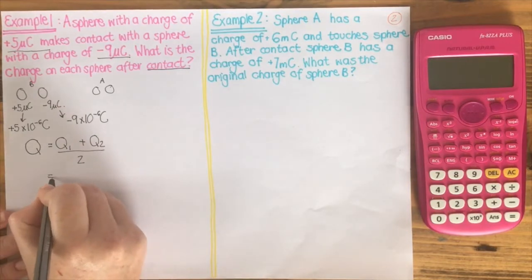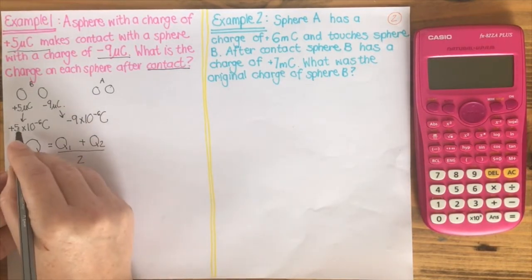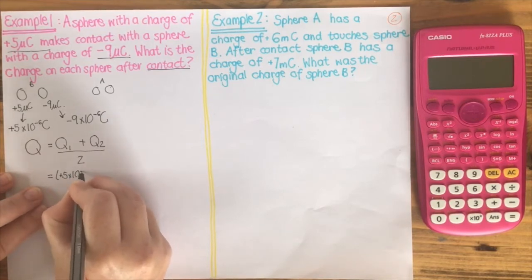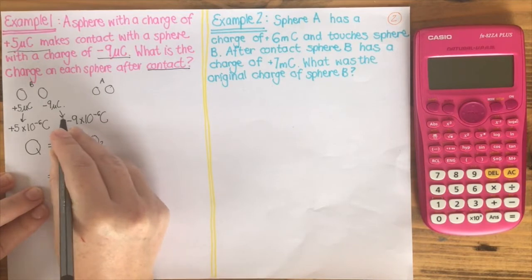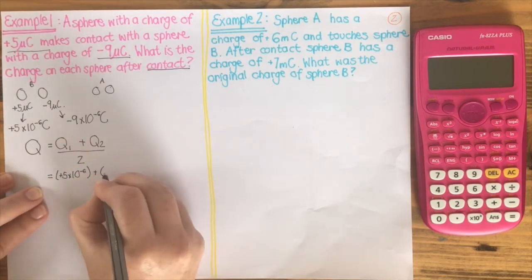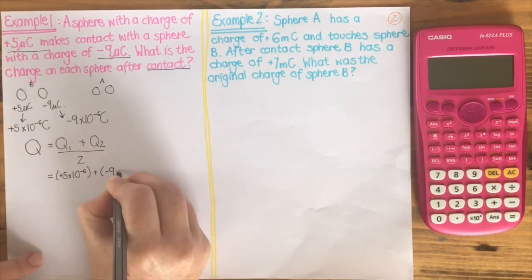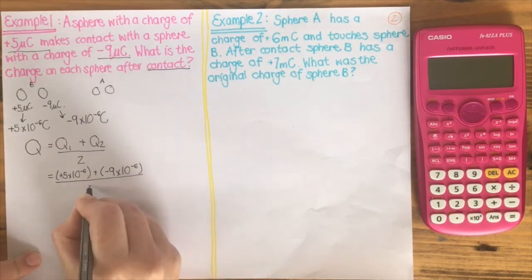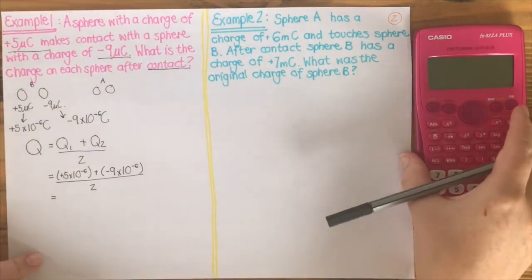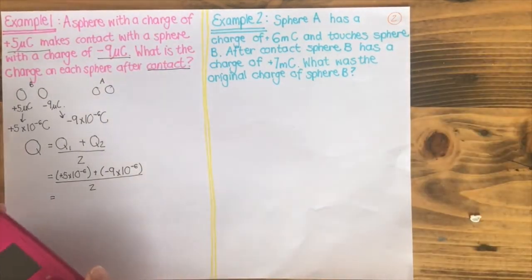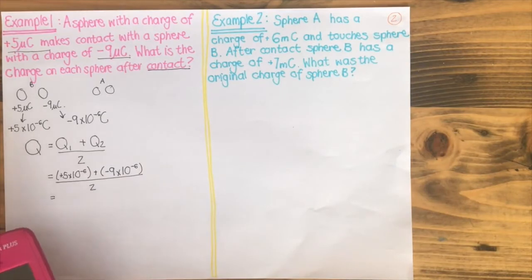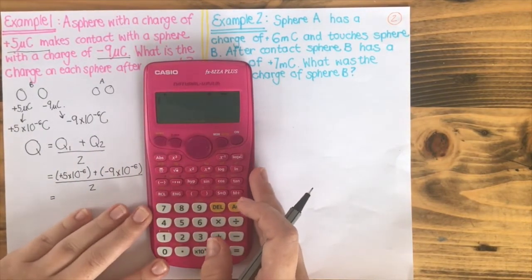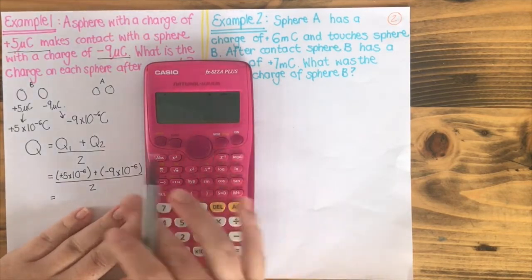Substituting in: our first sphere is plus 5 times 10 to the power of minus 6, add — in brackets — minus 9 times 10 to the power of minus 6, all over 2. Now for the calculator work: there is a specific way that I like you grade 10s to start using your calculators.